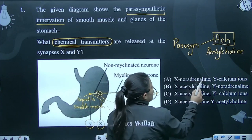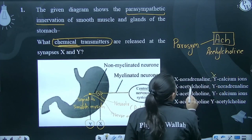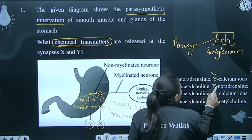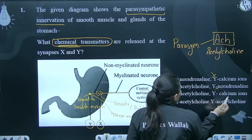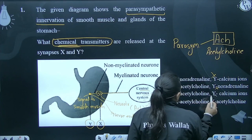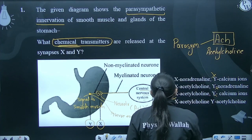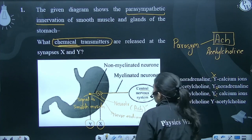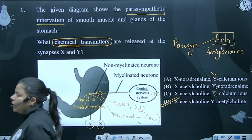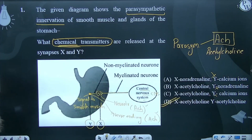If we consider the options: noradrenaline and calcium — no. Acetylcholine and noradrenaline — that would be the answer for a sympathetic condition. Acetylcholine and calcium — no. Acetylcholine and acetylcholine — yes. Your answer will be option number B: acetylcholine and acetylcholine.